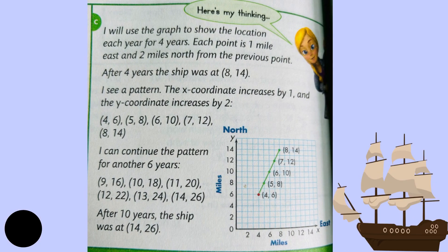Here's my thinking: I will use the graph to show the location each year for four years. Each point is one mile east and two miles north from the previous point. After four years, the ship was at (8, 14).